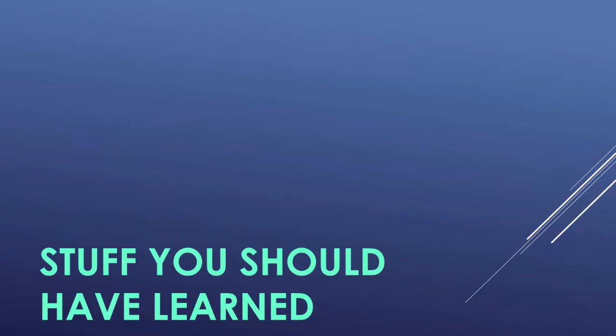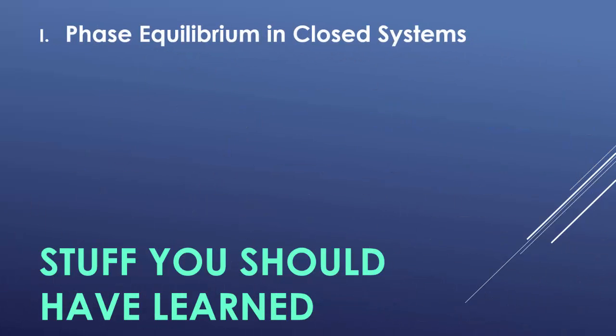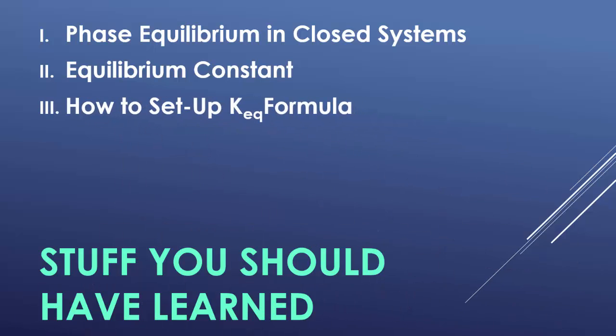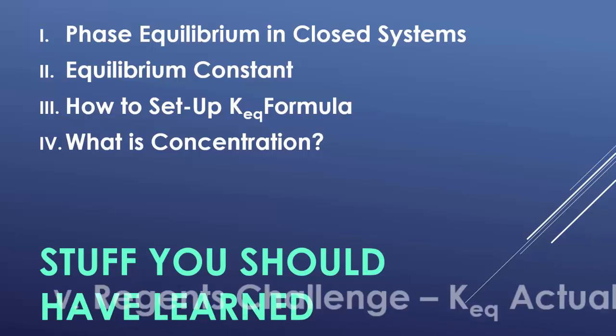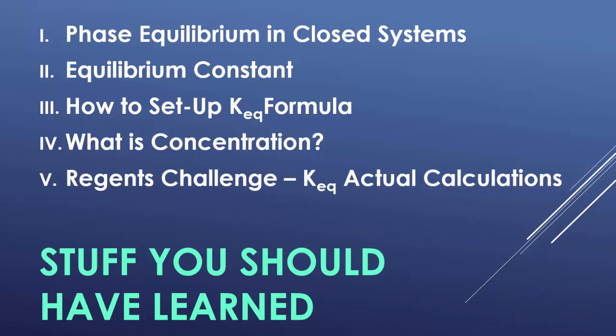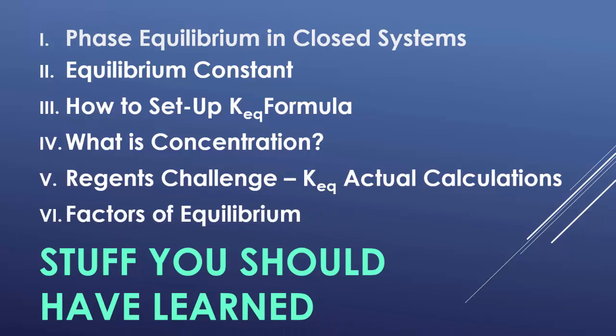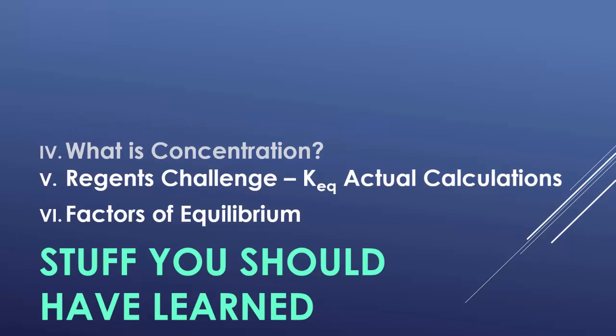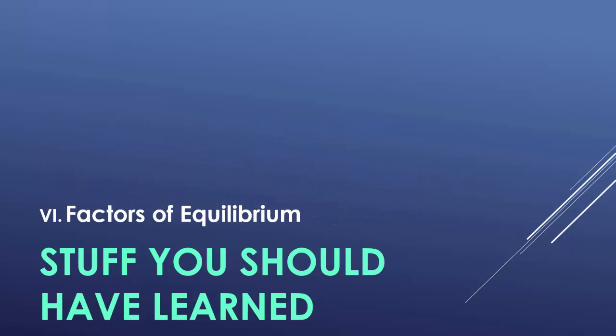Things you should have learned: Phase equilibrium in closed systems. Equilibrium constant. How to set up the equilibrium constant. What is concentration? Regents challenge or actual calculations of the equilibrium. And finally, factors that will affect the equilibrium. We are finally done with this unit.